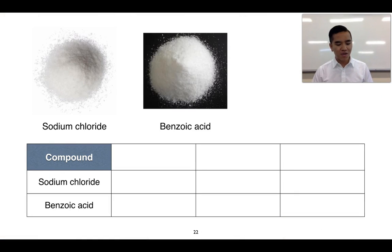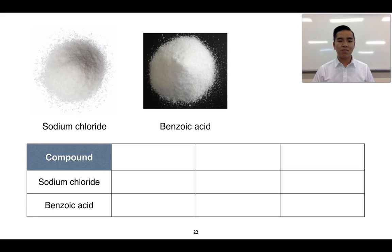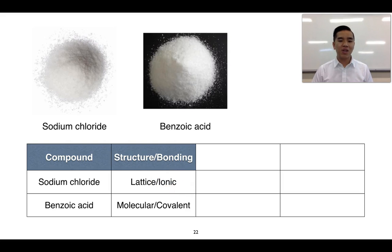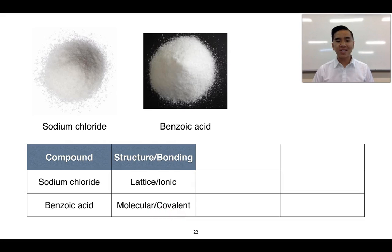We're going to look at two examples: sodium chloride and benzoic acid. Comparing one property at a time, starting with bonding and structure: sodium chloride, NaCl, is made up of sodium and chlorine — both a metal and a non-metal — so it will exhibit ionic bonding, and all substances with ionic bonding will have lattice structures. Benzoic acid, on the other hand, is made up of only non-metal atoms, so it exhibits covalent bonding, and benzoic acid molecules form a molecular structure.